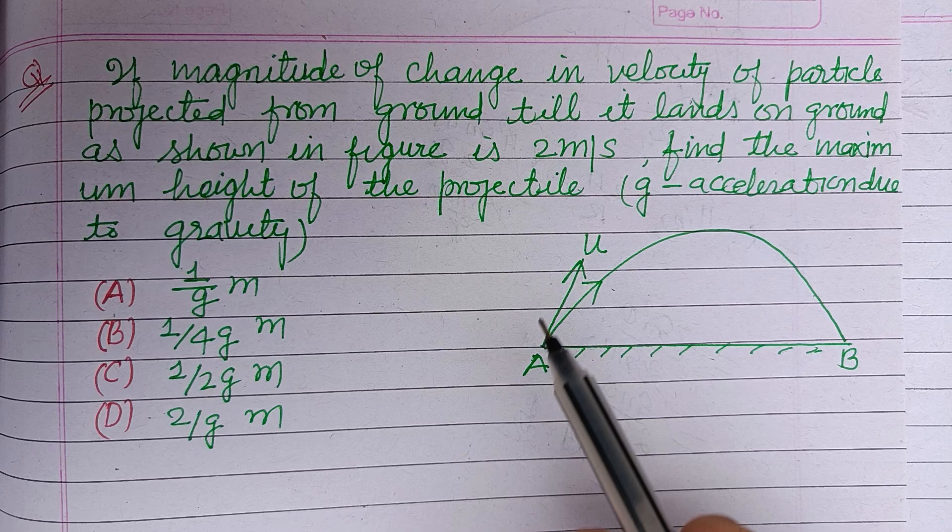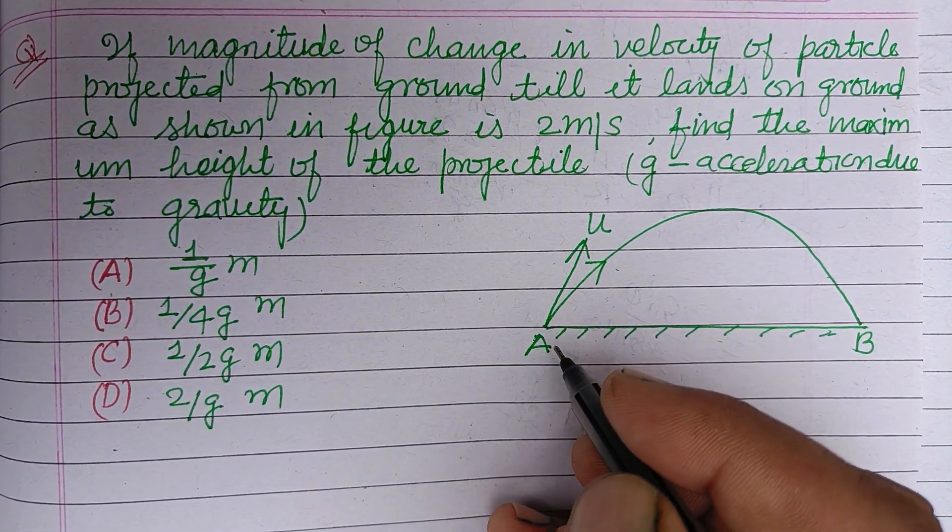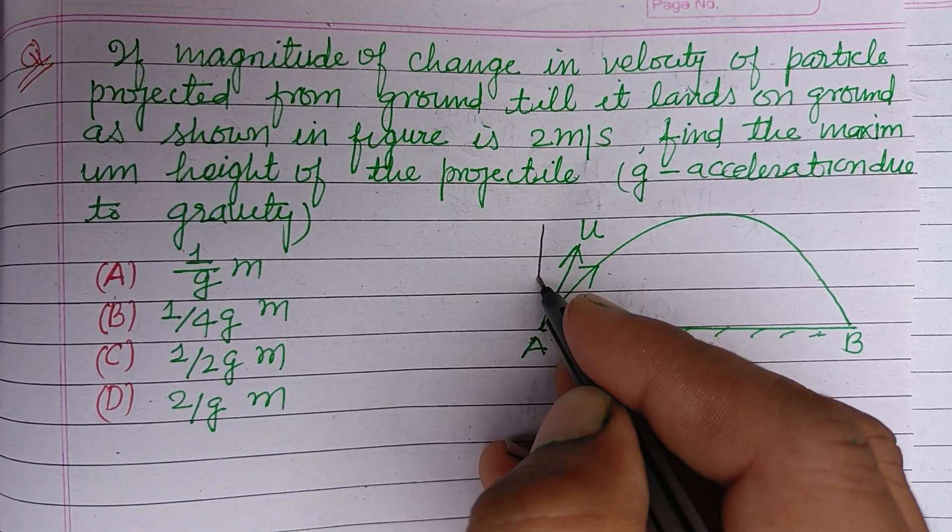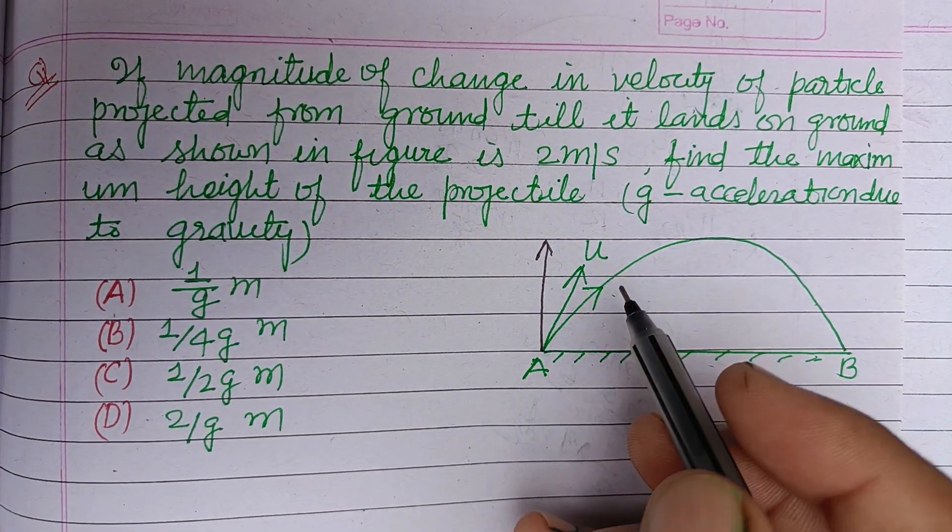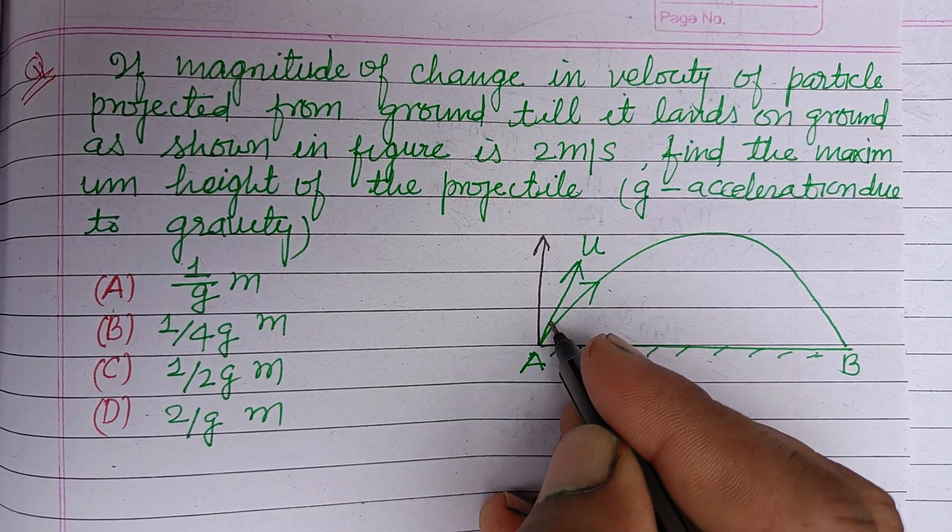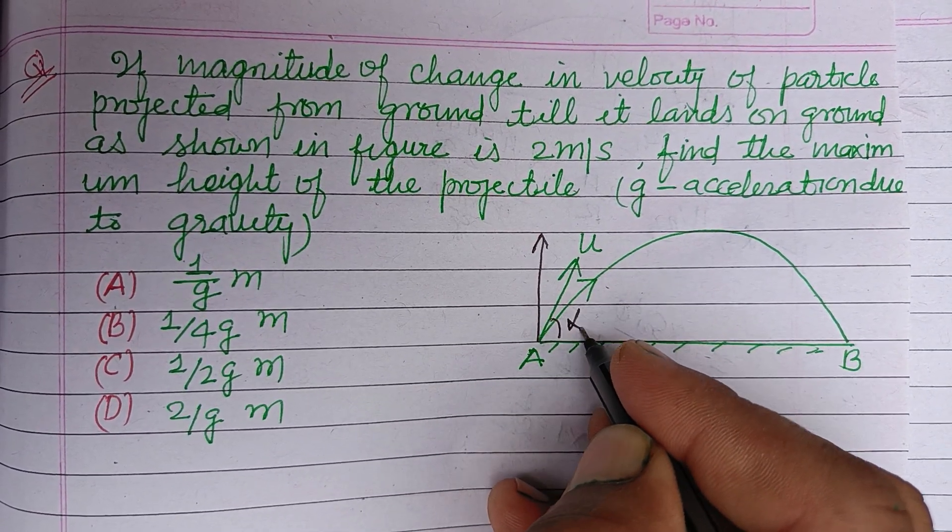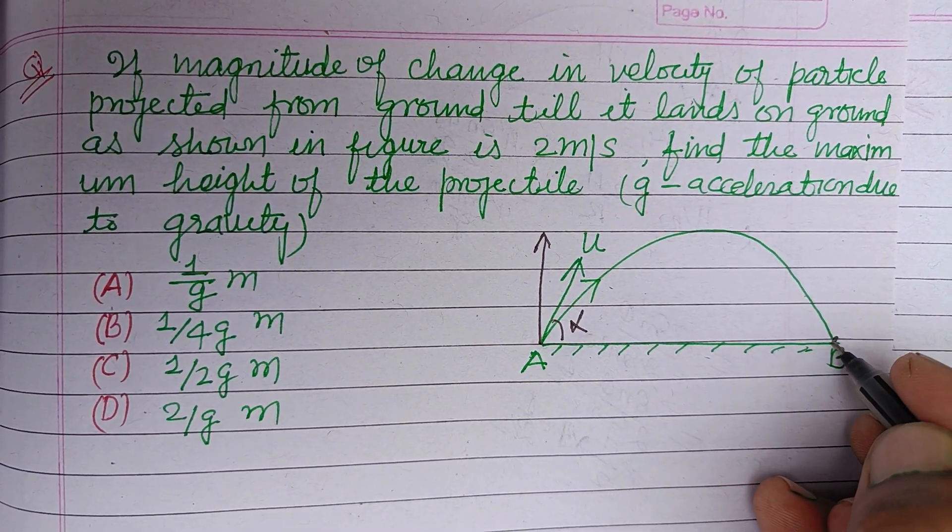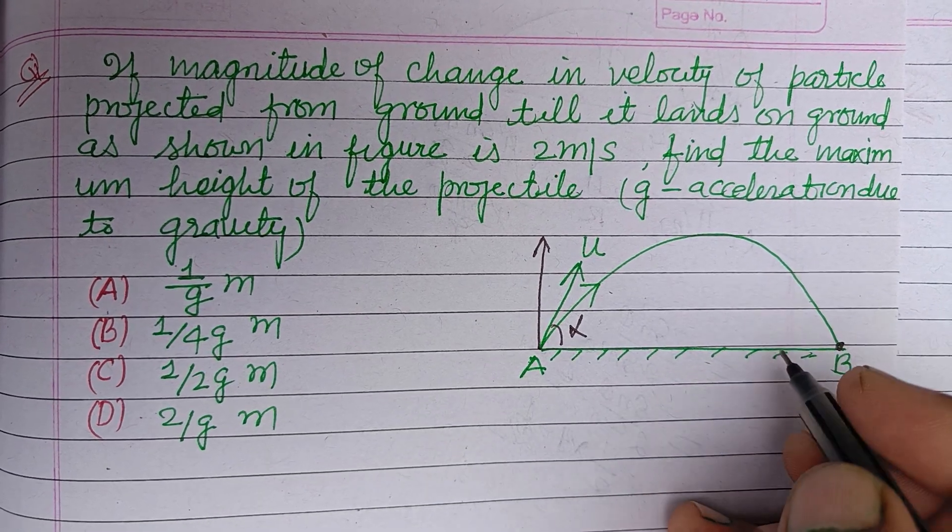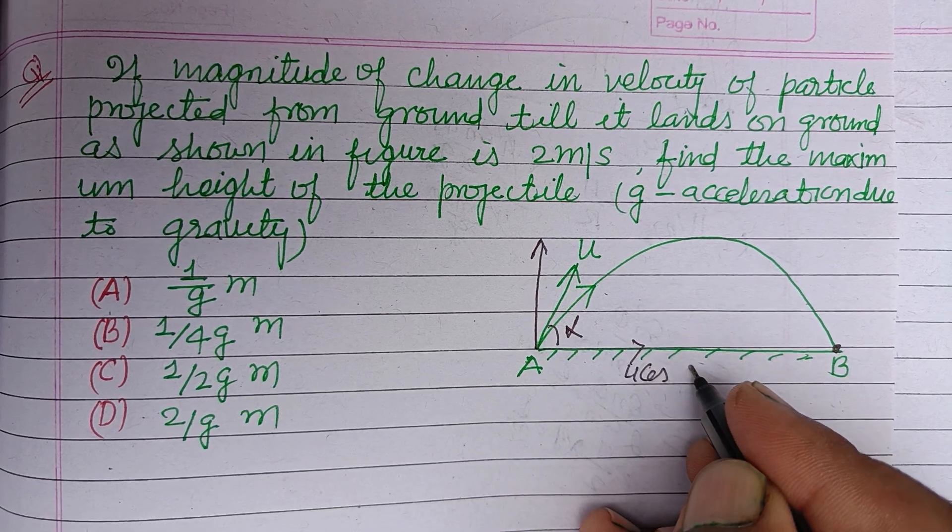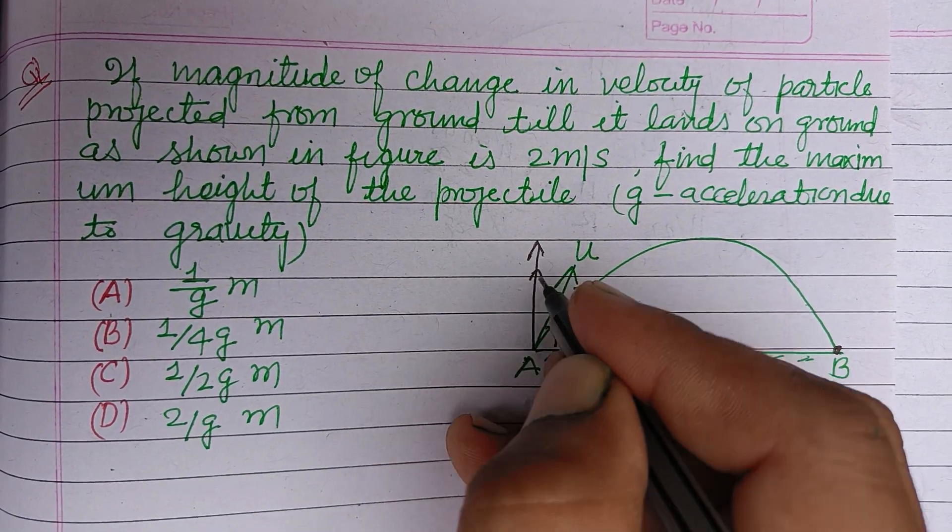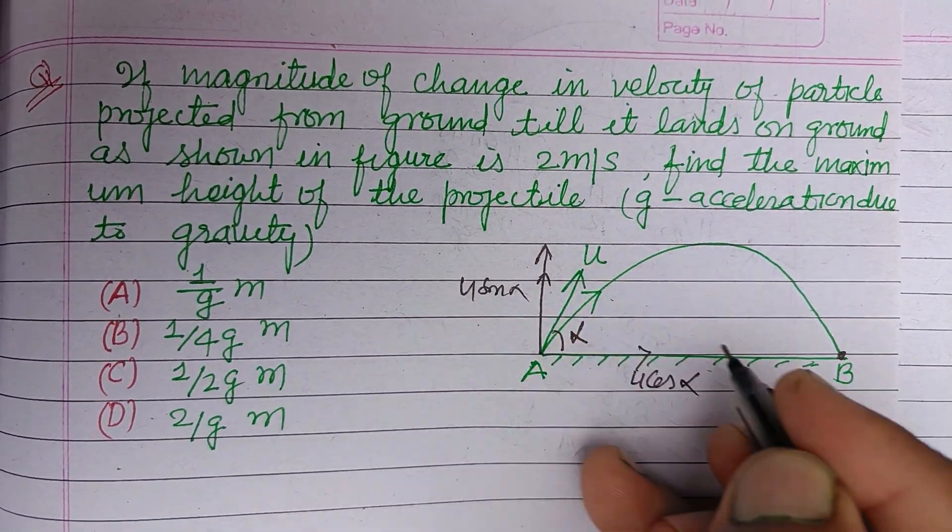So students, here the question is saying that a particle is projected with velocity u at an angle of alpha. When it reaches at point B, here it is u cos alpha and here it is u sine alpha.